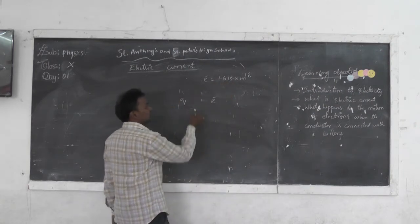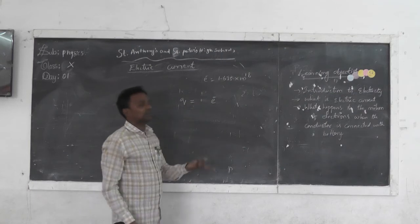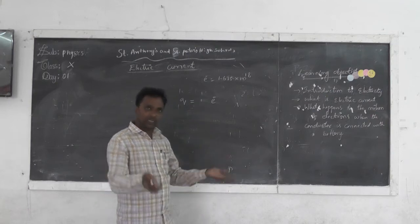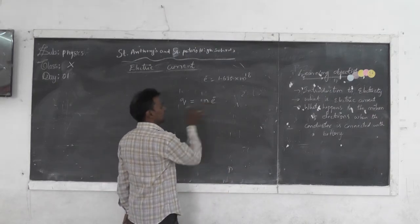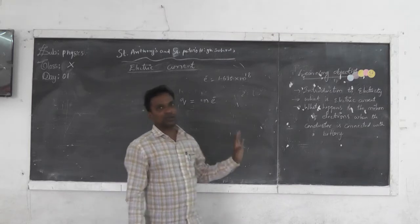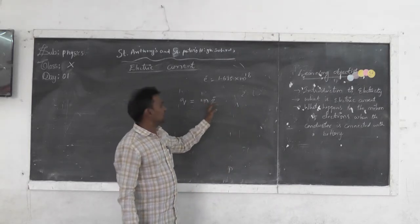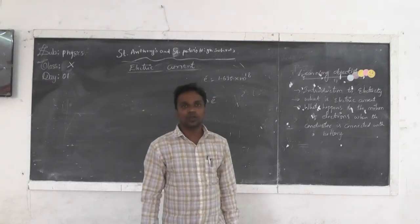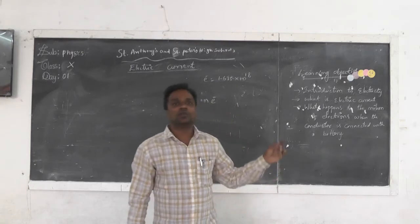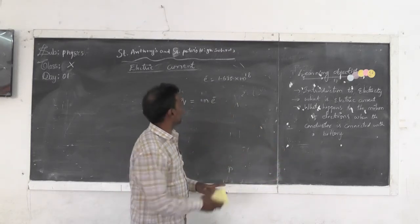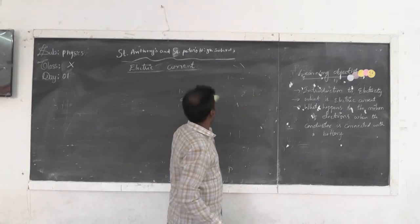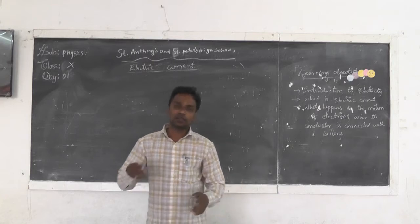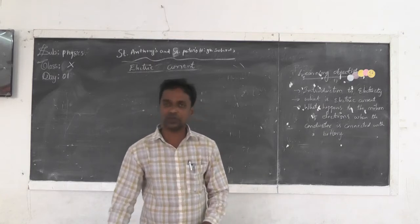So, charge of one electron — if there are two electrons, that means 2e. If three electrons are there, then 3e. Like that, if N electrons are there, we write N times e. That means charge is equal to Q = N × e, where N is the number of electrons and e is the charge of one electron. Now, in these situations, how will the electricity be flowing, and in which situation does it flow?